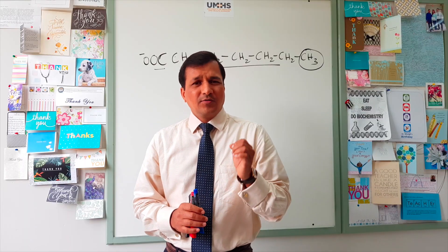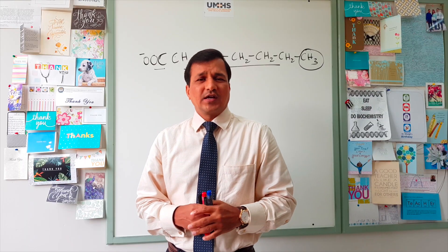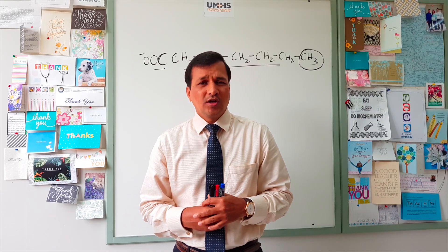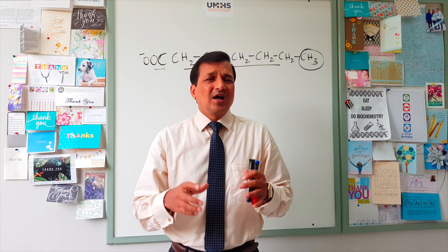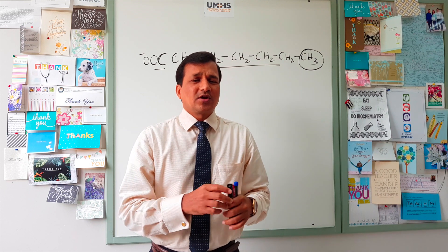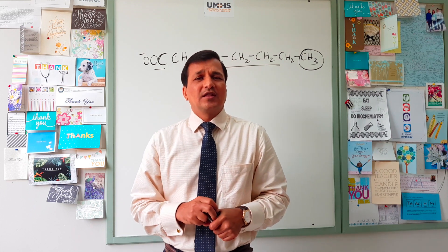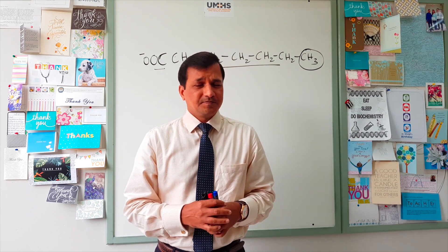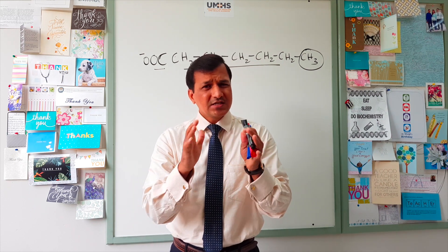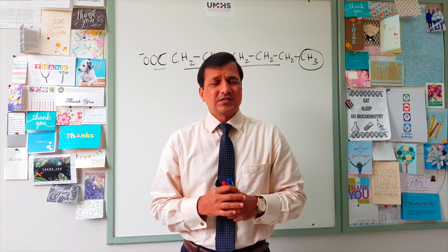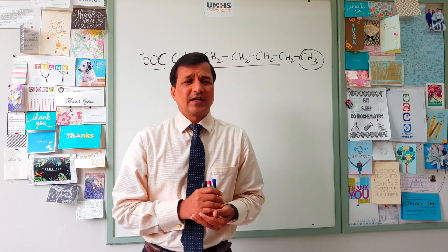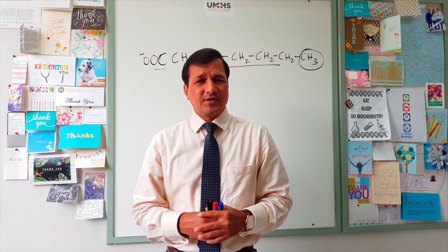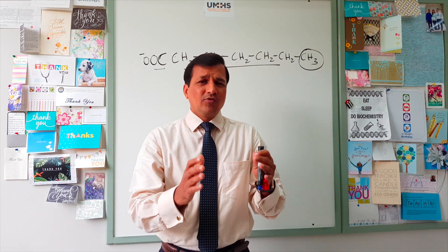An example of a very long-chain fatty acid is nervonic acid. Very long-chain fatty acids are mainly present in neuronal tissues and need to be oxidized in the peroxisomes.